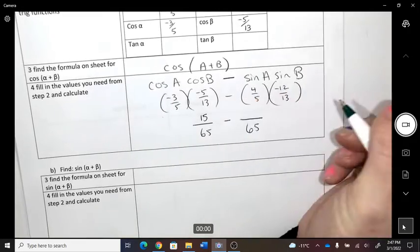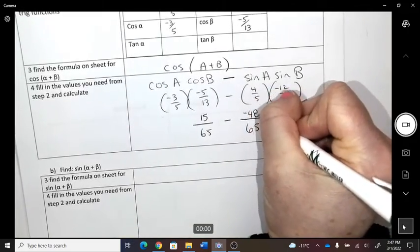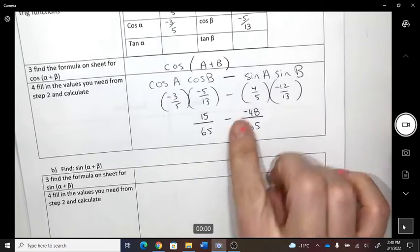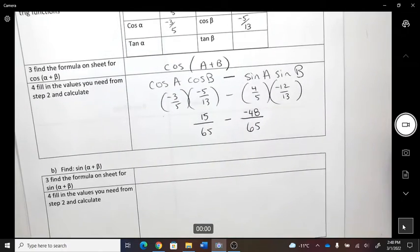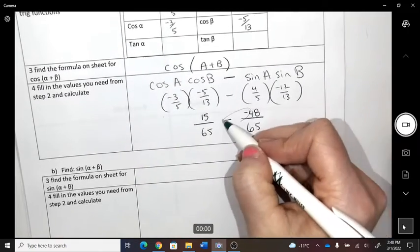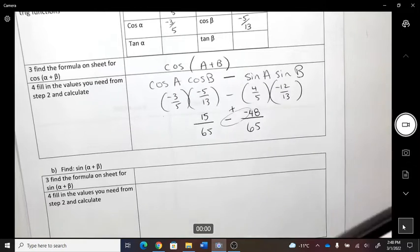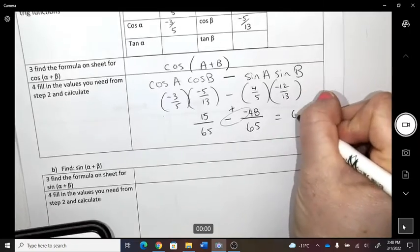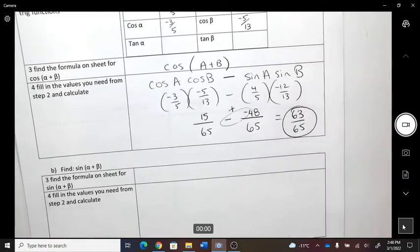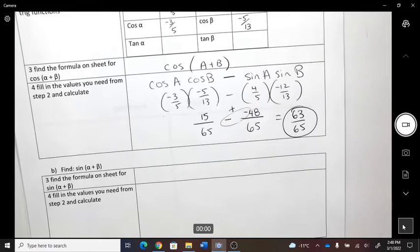Doesn't matter. Subtracting that negative will add it, right? So 63 over 65. So that is the cosine value of this new angle that we have.